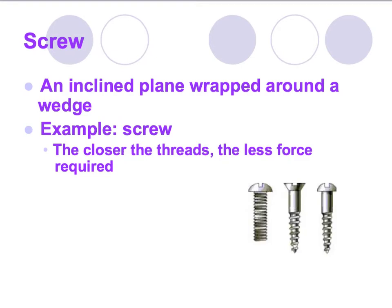The next simple machine is the screw, which is essentially a wedge with an inclined plane wrapped around it — kind of like the stripes on a candy cane. A screw is an obvious example. The closer the threads are together, the less force is required. When I helped a friend install a TV on the wall, we used screws with lots of threads so they'd hold better and be easier to drive in.